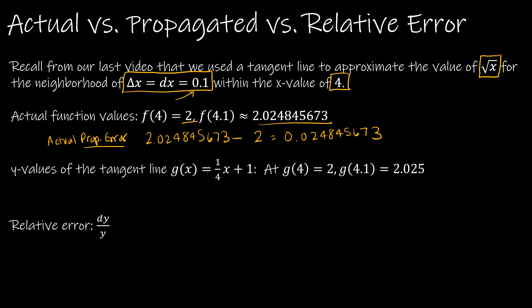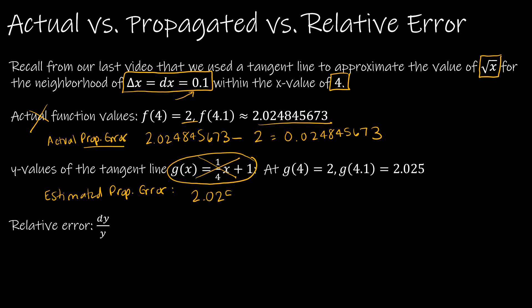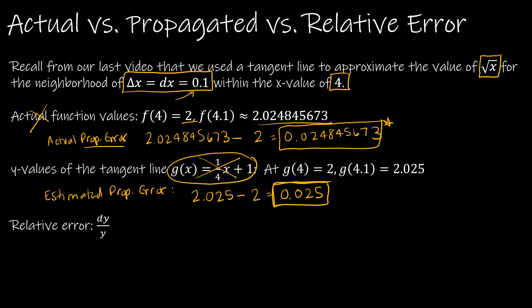If I want to know the estimated propagated error — just like in our last video — that's using the values of the tangent line. So when you get a question that says estimate the propagated error, that's what you're going to do. You take the values of the tangent line. In our last video I just gave you the values, so I would take 2.025 minus 2 to get 0.025. That is pretty close to the actual propagated error of 0.024845673 — so we're estimating it by 0.025.